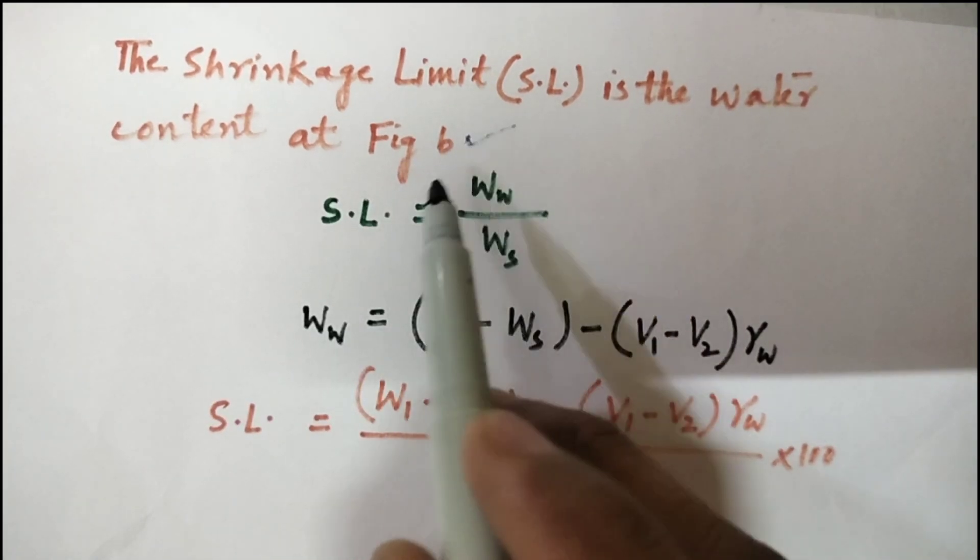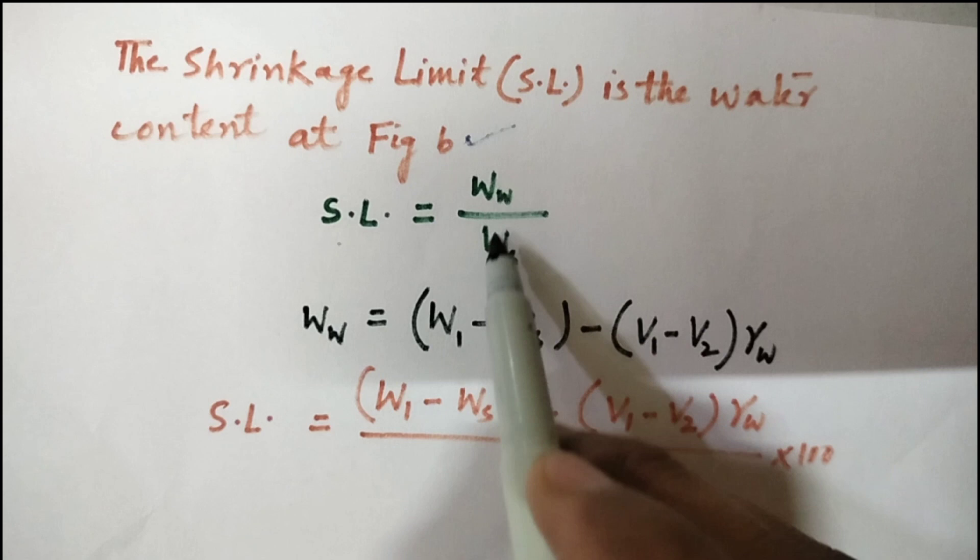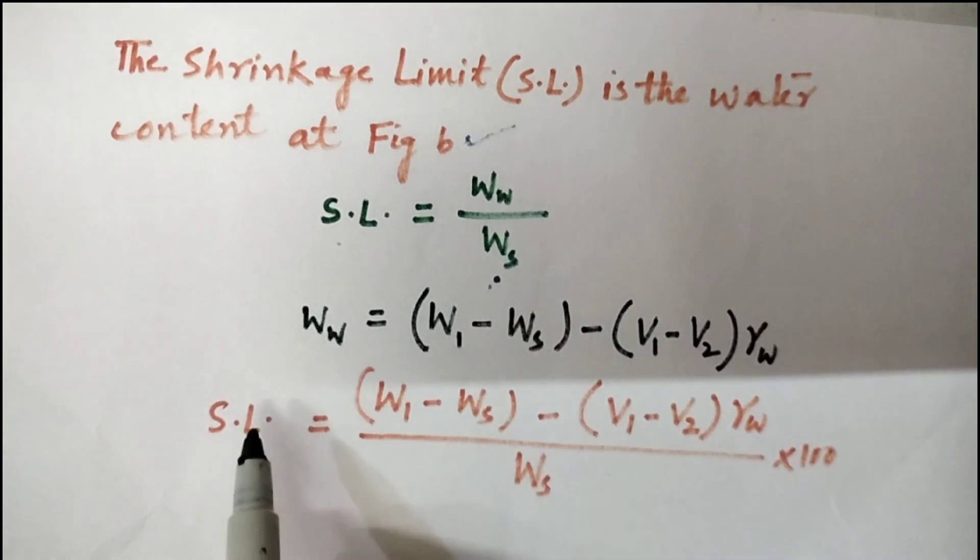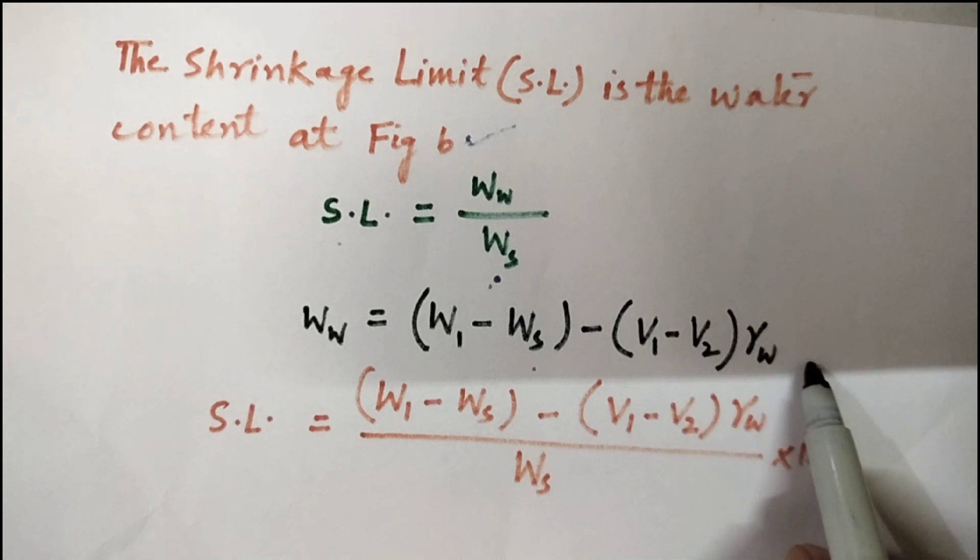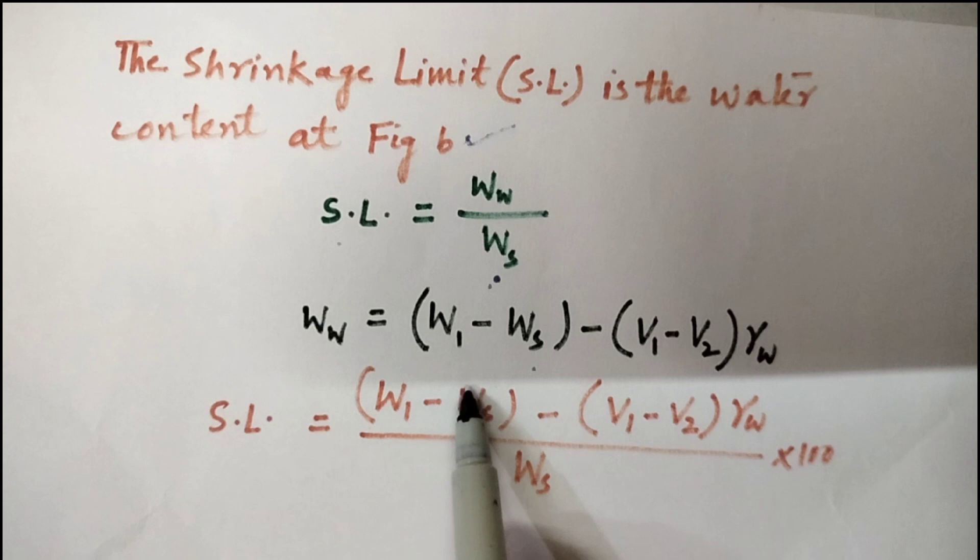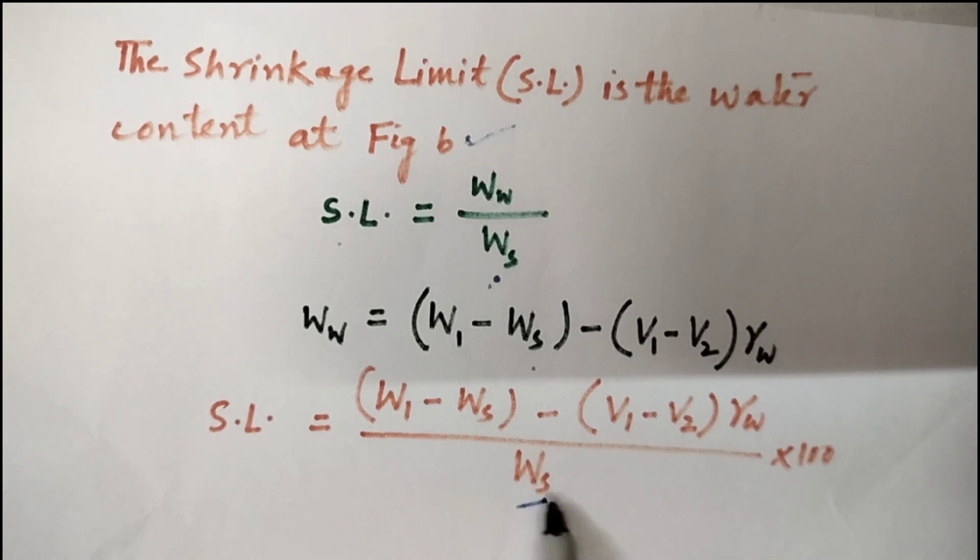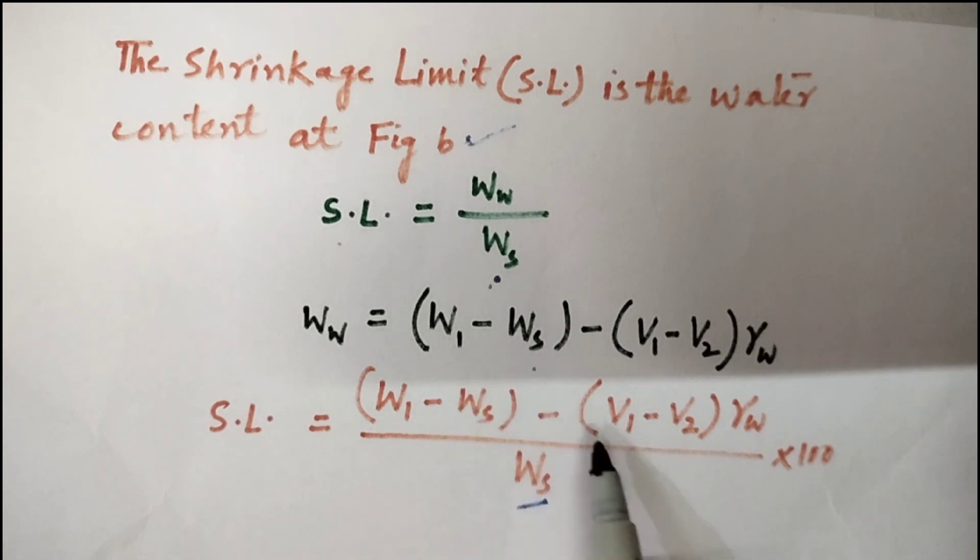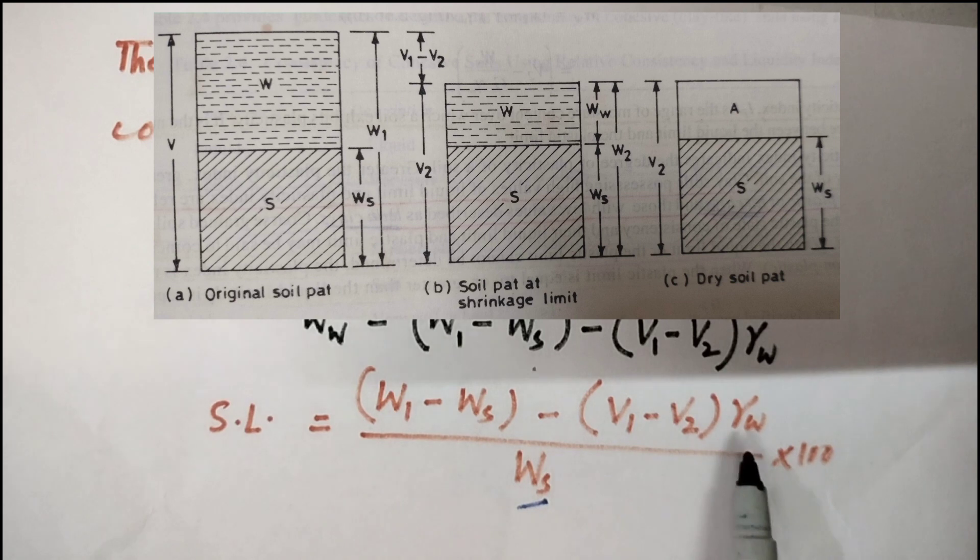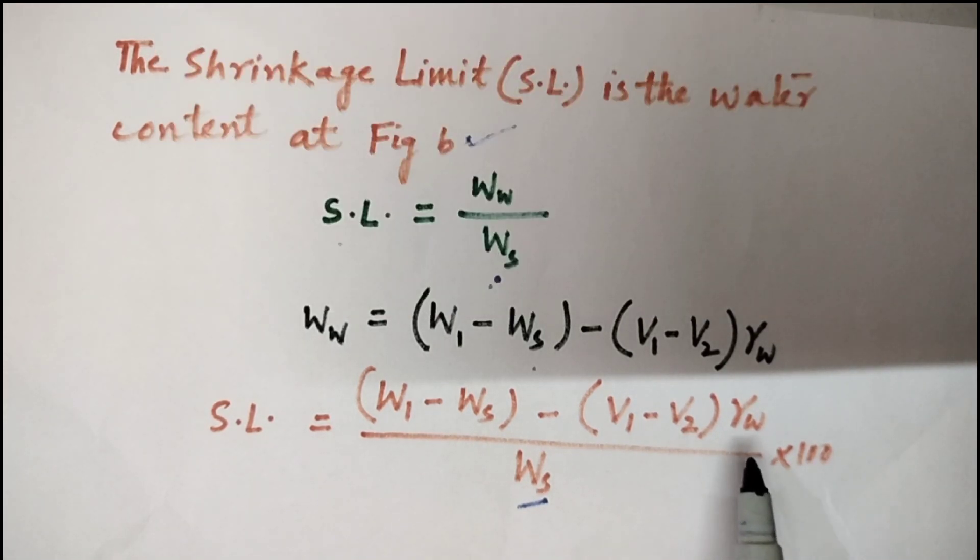Hence the shrinkage limit, SL is the water content at figure B. Shrinkage limit will be weight of water divided by weight of the dry soil. We can calculate weight of water equals (W1 minus WS) minus (V1 minus V2) times gamma W, divided by WS into 100 because it is represented in percentage. The terms W1, V1, and V2 are as shown in the figure discussed above and gamma W is unit weight of water that is a fixed value. Either we can take it as 1 gram per cc or 9.8 kN per meter cube.